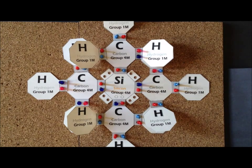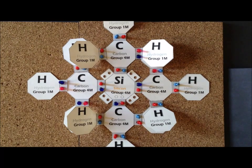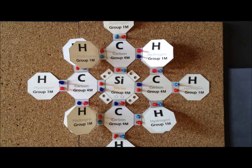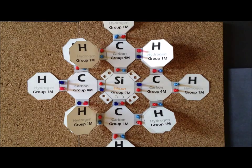Tetramethylsilane, TMS, has the chemical formula Si(CH3)4. This compound is of tremendous importance in both organic and analytical chemistry because it is the reference standard for proton NMR — our reference for hydrogen nuclei. It is typically added to NMR samples when acquiring the H1 spectrum.